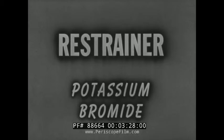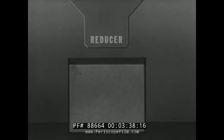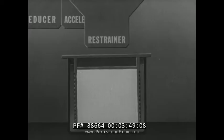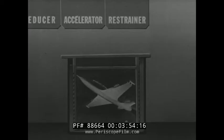The restrainer for developing solutions is potassium bromide. It prevents the reducer from blackening the whole film and lets it develop the latent image correctly. Let's add the restrainer to our solution. First the reducer, second the accelerator, now the restrainer. Now we will try another test negative. That's more like it.